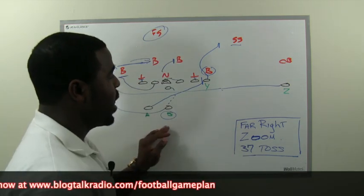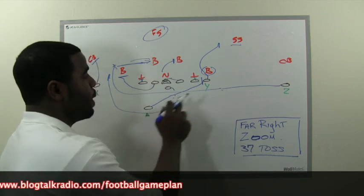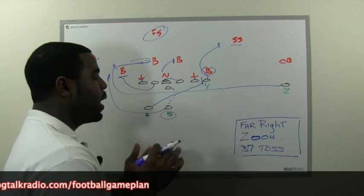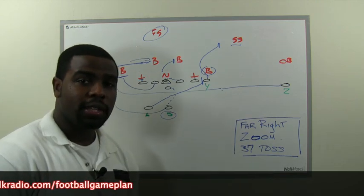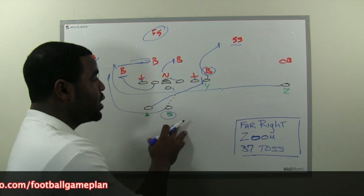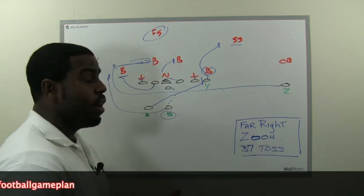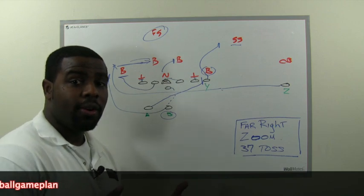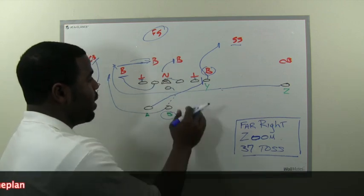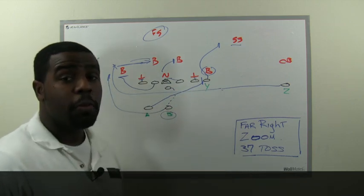That's Far Right Zoom 37 Toss. You see how the same motion from the Z receiver, the same motion from the quarterback — it allows you to run three plays out of this formation using the same style. The defense can't key on personnel, can't key on motion, can't key on direction. This type of play out of the original end around gives you so much flexibility.